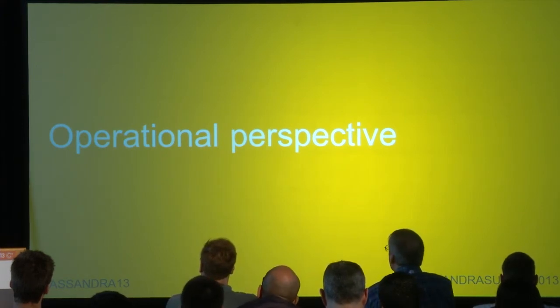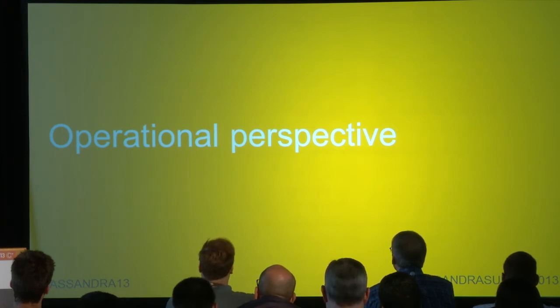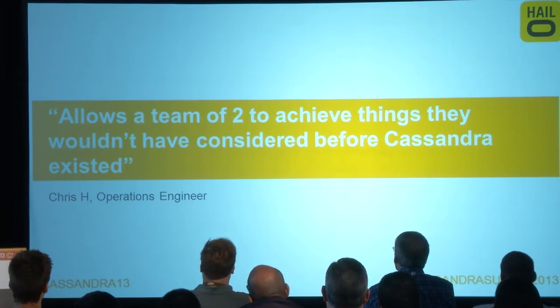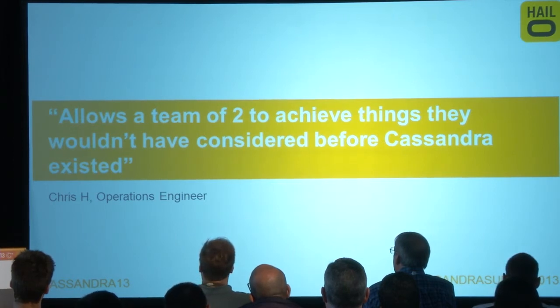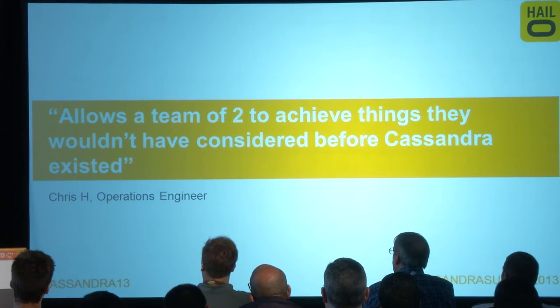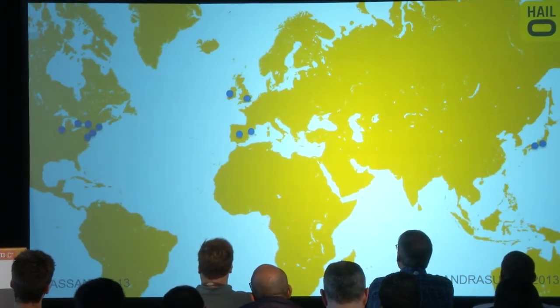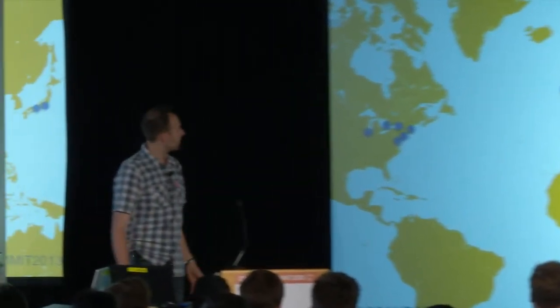Next, the operational perspective. The overall feeling from the ops team is that Cassandra has allowed a very small team of operations people to achieve things they wouldn't have considered before it existed. The main point is about global active-active replication — the fact that we can do that with a really small team. Halo operates from Tokyo and Osaka, London and Dublin, Madrid and Barcelona, and in North America: Toronto, Montreal, Washington, Boston, and New York. You can get a feel for why the replication story of Cassandra was so important for us.